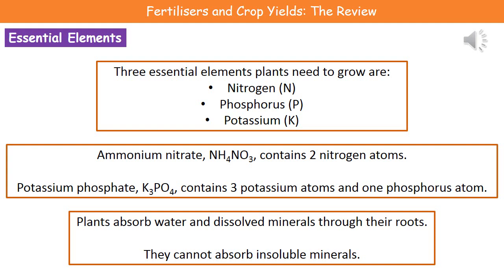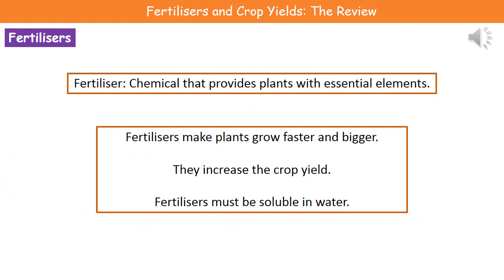Others might be fine for potassium and phosphorus and just need some nitrogen, so ammonium nitrate would be the solution. What we do need to remember is that all fertilizers we add must be soluble in water — the only way minerals or fertilizer can get into the plant is if dissolved in water and taken in through the roots. So fertilizers make plants grow faster, grow bigger, and increase crop yield, and they must be soluble in water to do this.